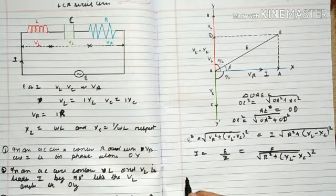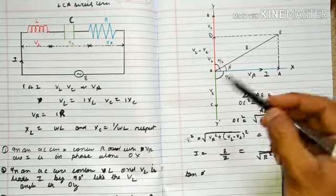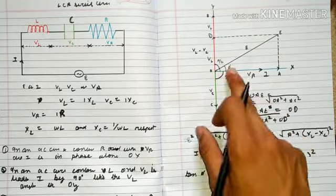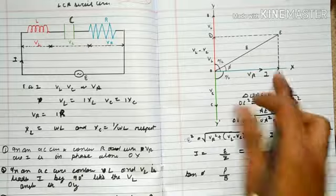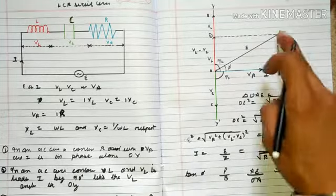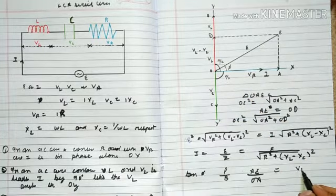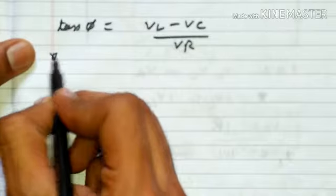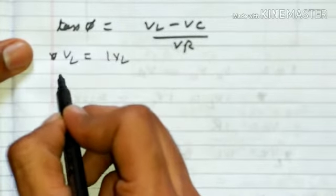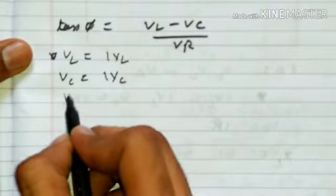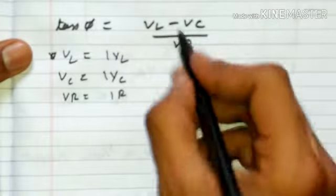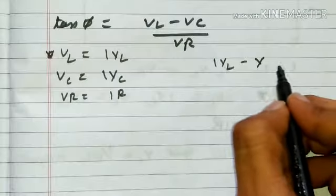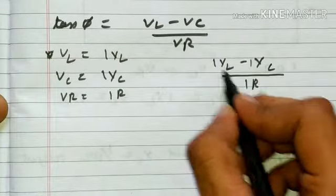We find tan φ because the phasor moves in anticlockwise direction. Tan φ is equal to perpendicular upon base, which is AE upon OA. AE is equal to VL - VC upon VR. Substituting values: VL = I×XL, so we get I(XL - XC) upon IR.